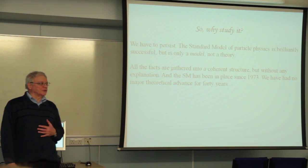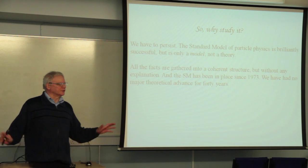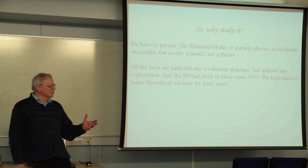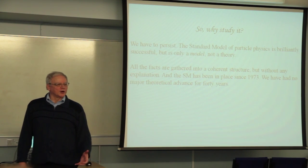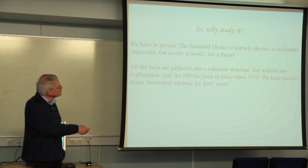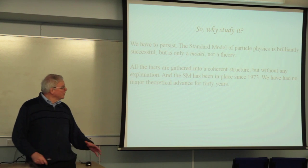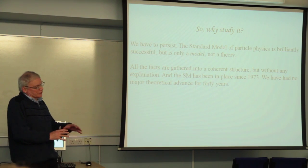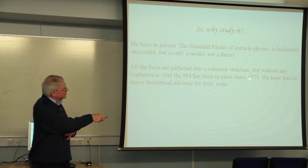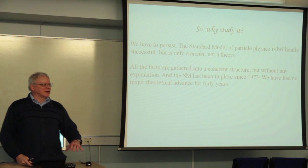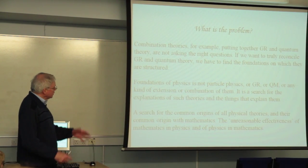Even though it's difficult, we should persist. We've got the standard model of particle physics — a wonderful theory, brilliant, magnificently successful, too successful for many people, because experiment keeps reproducing the standard model's results. But it is only a model. It's never been a standard theory. It's not a structure which explains things; it is a set of facts gathered into a structure, but it's not a fundamental structure. It doesn't start from some other place and explain why we get to the standard model. We've had this standard model since 1973, and we've had no really major advance on explaining it in 40 years. So we've got to try to get to it from some other route.